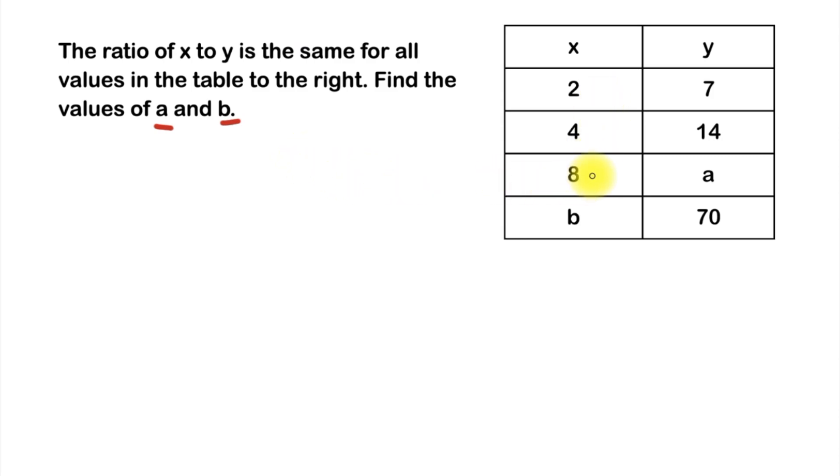When it comes to a question like this I like to create a small little mini table for each of my values. Let's start by making a table to find the value of a, and after that if you want you can pause the video and try to use that as a model to find the value for b.